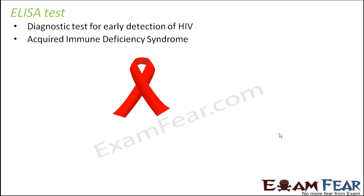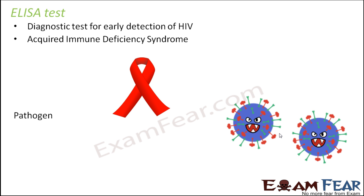AIDS mainly attacks the immune system of the body. It tries to spoil the immune system, and once the immune system is compromised, your body doesn't have any protection of its own. So even a small infection can actually become fatal and can kill the person. The pathogen which causes AIDS is HIV, which is human immunodeficiency virus.